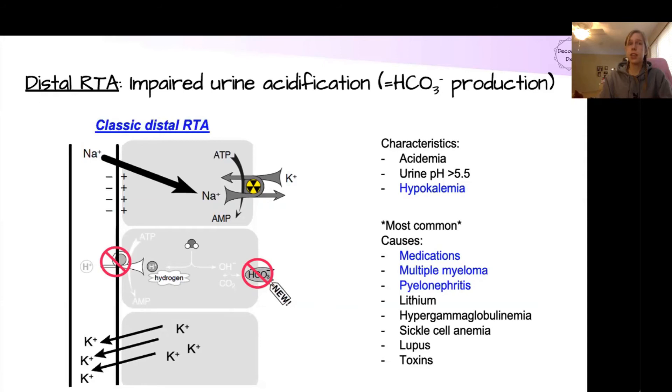So characteristics of a classic distal RTA. Obviously the acidemia, it's a metabolic acidosis, and typically your urine pH will be higher because you're not pumping that excess hydrogen into the urine. And this typically will have a hypokalemia because of the potassium wasting that we talked about. This is one of the more common types of RTA that we see because there's all sorts of things that can cause this. Many, many medications, which you can find lists of online, multiple myeloma, pyelonephritis, sickle cell, various different toxins, even just critical illness sometimes can cause classic distal RTA.